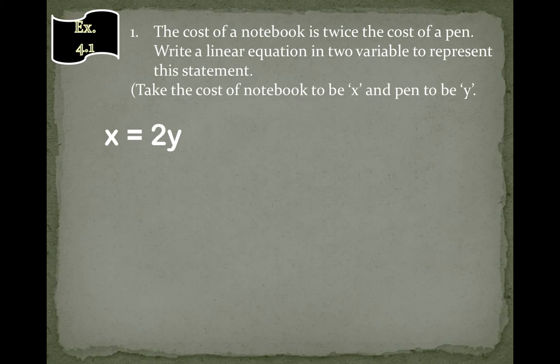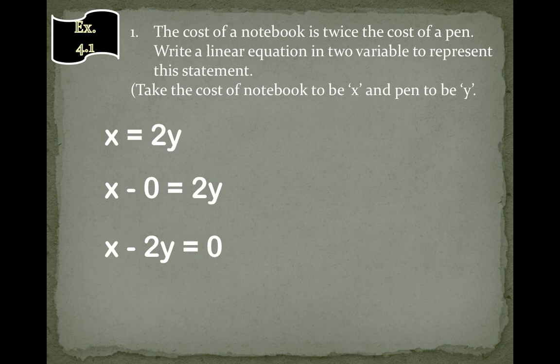So in this equation, the right hand side is not 0. So we can write x minus 0 is equal to 2y. And then we'll exchange 0 and 2y. So this will become our linear equation. Thank you.